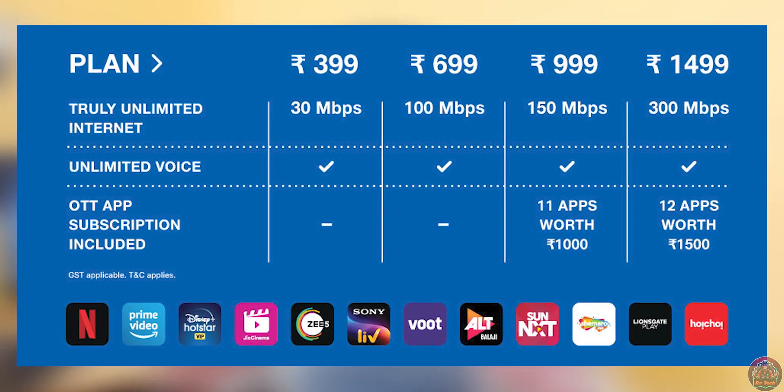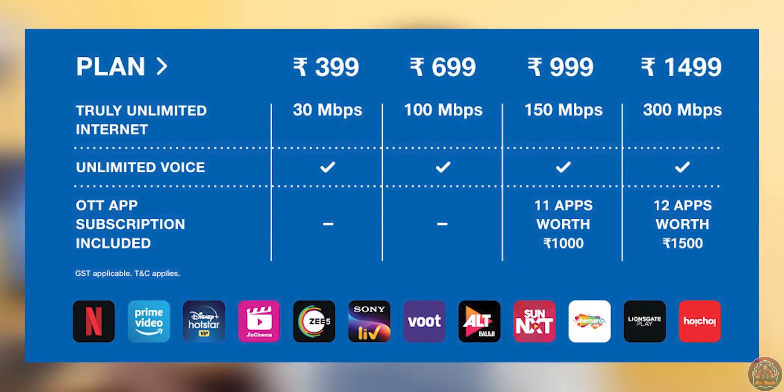That's why it is shown on the screen, so you will know. If you have a plan for ₹1500, you will have 300 Mbps speed. You will have all the OTT apps subscription — there is a Netflix subscription included. You will have all the OTT platforms.